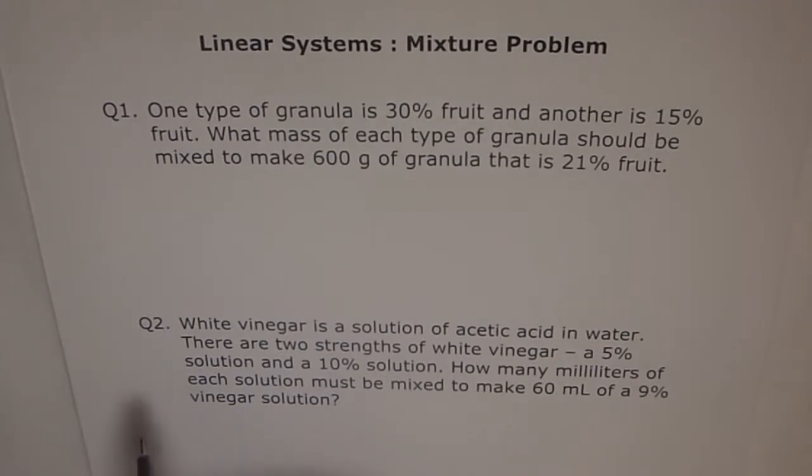Let's look into the second problem. White vinegar is a solution of acetic acid in water. There are two strengths of white vinegar: a 5% solution and a 10% solution. How many milliliters of each solution must be mixed to make 60 milliliters of a 9% vinegar solution? So this sounds to be a very similar question to the first one. They are basically mixture problems where we are trying to mix two things and get the third thing as per our requirements. So I will get into details of question number one and show you how to do it, and I will leave question number two for you.